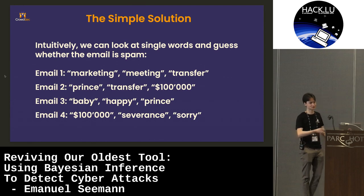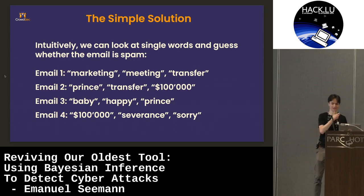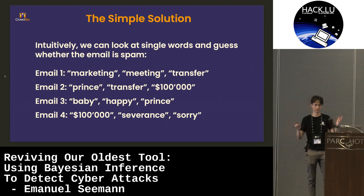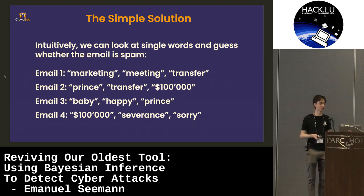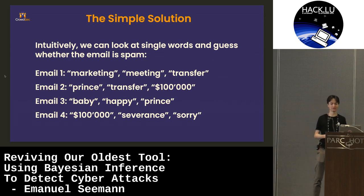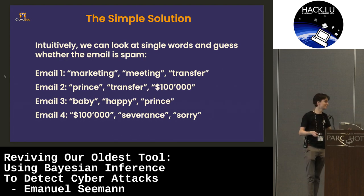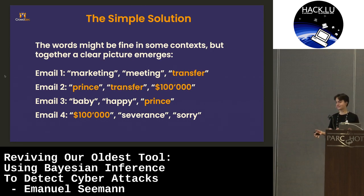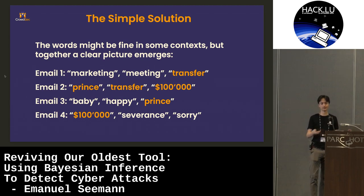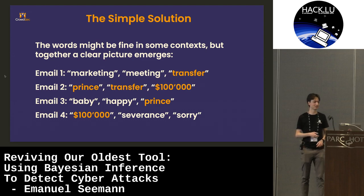So let's look at some emails here — we have only terms of the emails. If we look at single words, we can guess whether an email is spam. The first one is marketing, meeting, transfer — it's probably an email from marketing. The second one is prints, transfer 100,000 — this might be spam. The third one is baby, happy prints — this is probably Paige from marketing who got her baby, congratulations, but it shouldn't end up in spam. The fourth one is 100,000 severance — a mail you don't want to receive, but still don't want to see in spam. As humans, we somehow have context on these words. When they appear alone, like the word transfer, it's not really a clear indicator that something might be spam, but if you see these words together, then it might be a spam email.